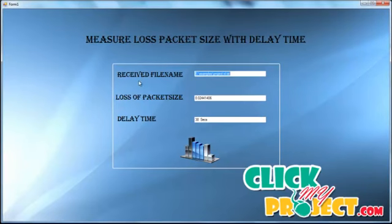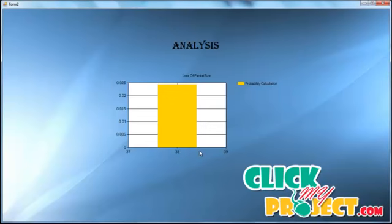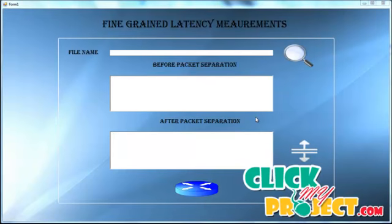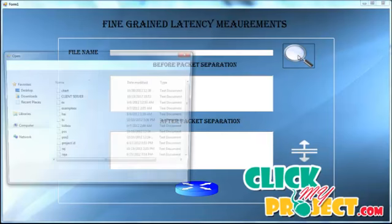Now click the measurement button for packet size. It shows the last packet size with delay time, the received file name, and the loss of packet size — all viewed on this page. Delay time is displayed in seconds. Click the chart button to view the different types of packet loss and corresponding delay times. We will now see how different types of files have different packet loss and delay times.